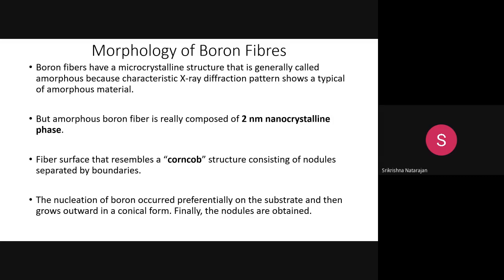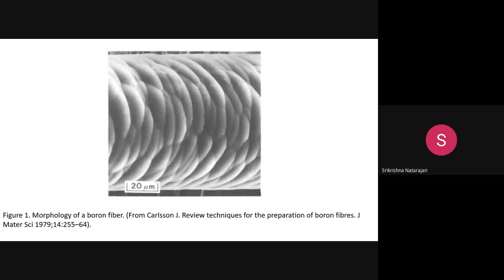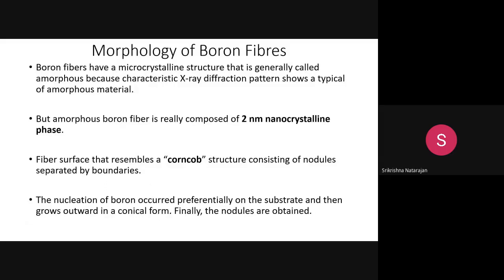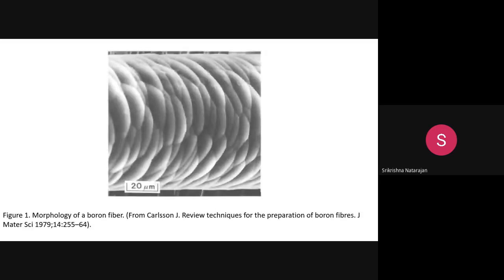These nodules are formed by nucleation because when boron trichloride and hydrogen undergo reaction on the substrate, nucleation starts and grows outward in a conical form, creating a bulging surface. This is how the boron fiber morphology looks when observed by scanning electron microscopy. The structure is generally amorphous with a two-nanometer nanocrystalline phase, resembling a corn cob.